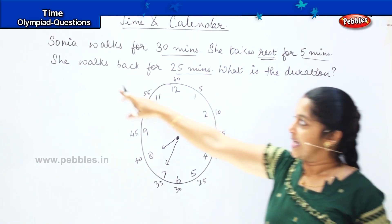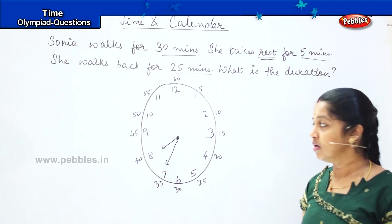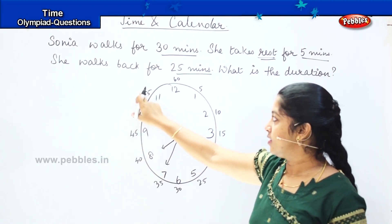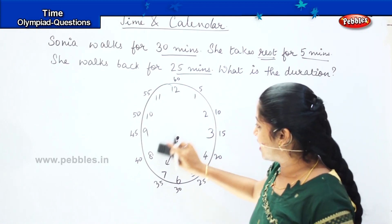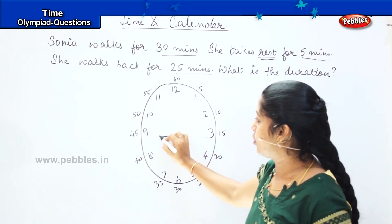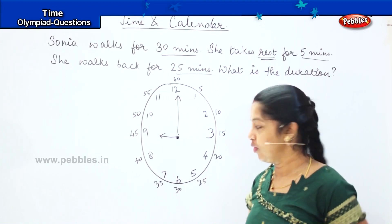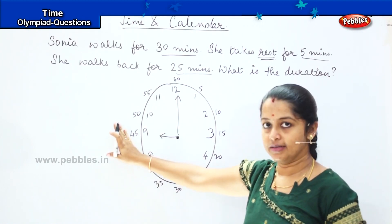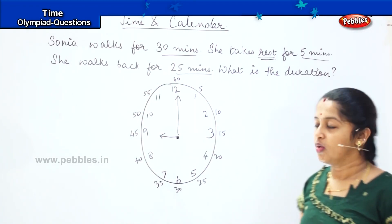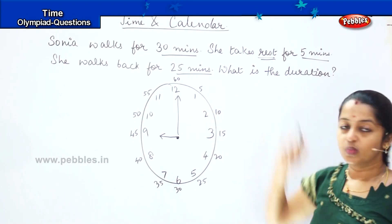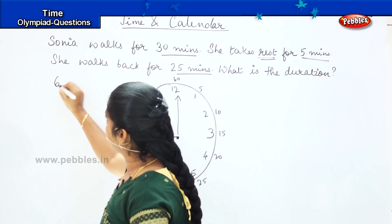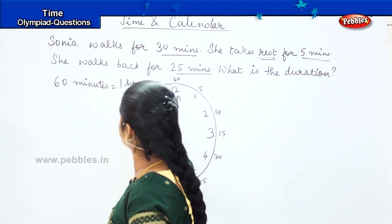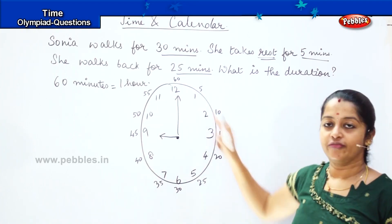After that, they say that she walks back for 25 minutes again. So she will be walking back for another 25 minutes, counting from here — 5, 10, 15, 20, 25 — which means that Sonia will reach back home at 9 o'clock. She is taking rest at 8:35, so from here she is walking back again — 5, 10, 15, 20, 25 — and at 9 o'clock she reaches back home. So the total duration covered is 60 minutes or 1 hour. She has covered a total walking span of 1 hour.